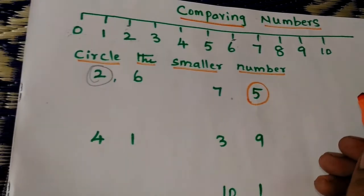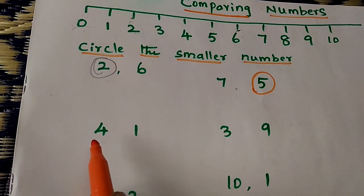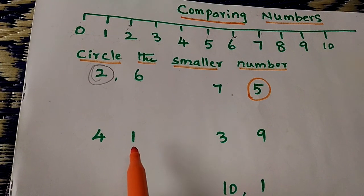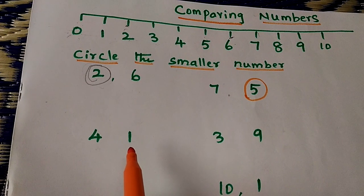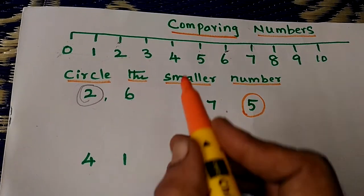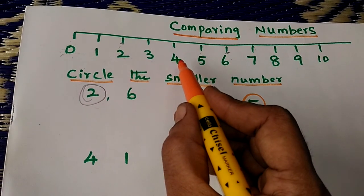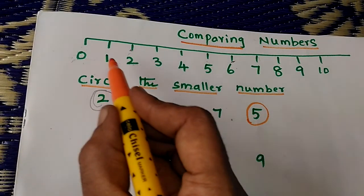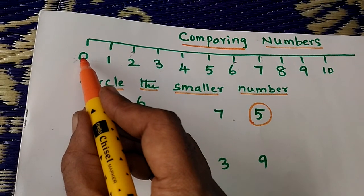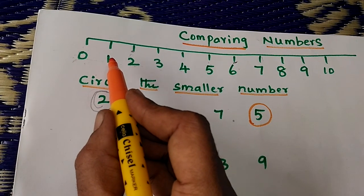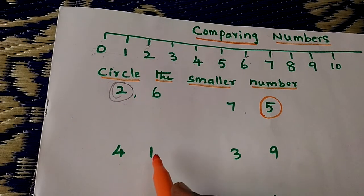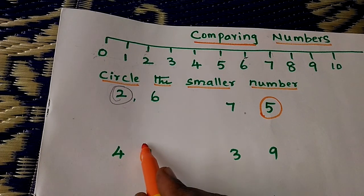One more example. We have 4 and 1. Which one is smaller? Find out which one is the smaller number. Where is 4? Here. Where is 1? Here. 1 is closer to 0, so 1 is smaller than 4. Circle the smaller number.